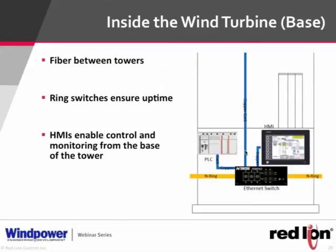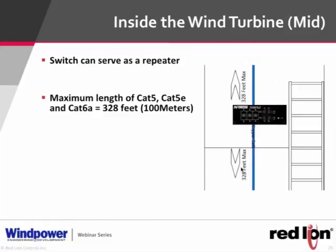If you don't need a modular Ethernet switch, both products are easy to pull out of the box and have running quickly. Copper has a 328-foot (100-meter) limit. If a tower is 400 feet tall, you place an Ethernet switch in the middle to act as a repeater, resetting the 328-foot budget. If you can't place anything in the middle, use fiber optics all the way to the top. CAT5, CAT5E, and CAT6A all max out at 100 meters.